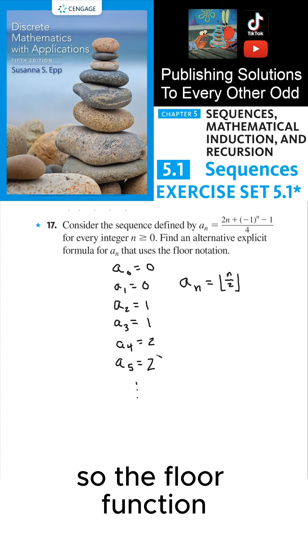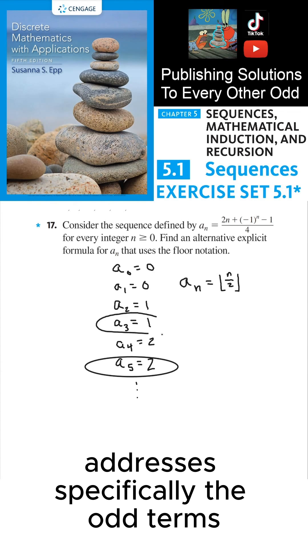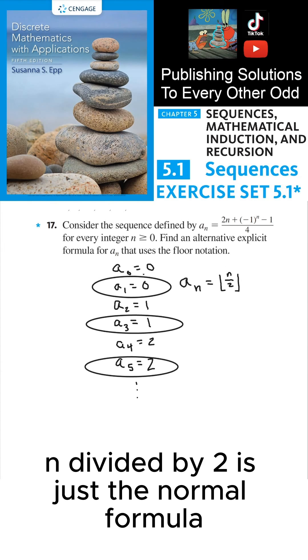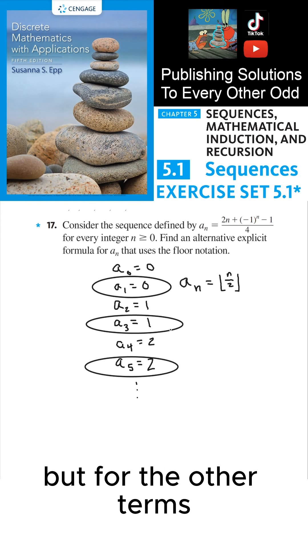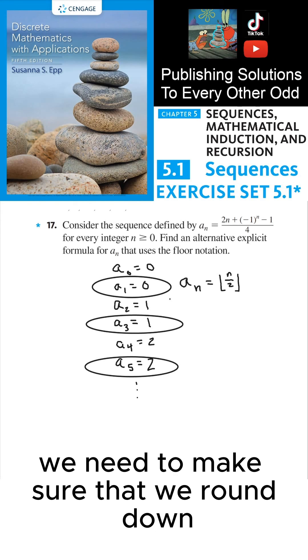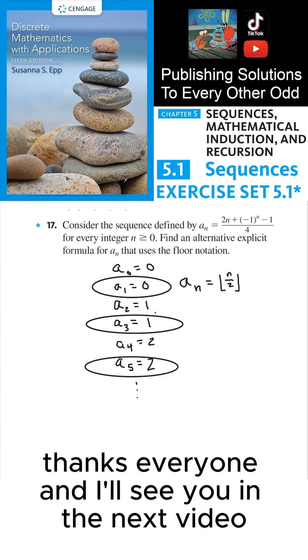So the floor function addresses specifically the odd terms. For the even terms, n divided by 2 is just the normal formula. But for the odd terms, we need to make sure we round down. Thanks everyone, and I'll see you in the next video.